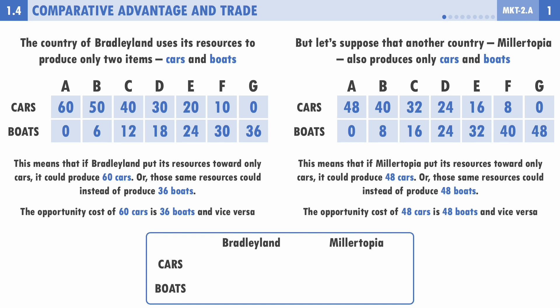The table identifies for each country, if they put all resources toward one good, how much could they produce. For Bradley Land: all resources toward cars yields 60 cars, no boats; all toward boats yields 36 boats, no cars. For Millertopia: 48 cars or 48 boats. This gives us the X and Y intercepts — essentially the shape of each country's production possibilities curve.